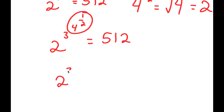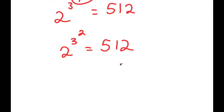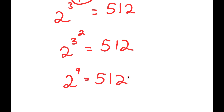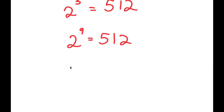This means I have 2 to the power of 3 to the power of 2 is equal to 512. Now, 3 to the power of 2 is equal to 9. So I have 2 to the power of 9 is equal to 512. And finally, 2 to the power of 9 is equal to 512, as we already said at the start. So we get 512 is equal to 512.